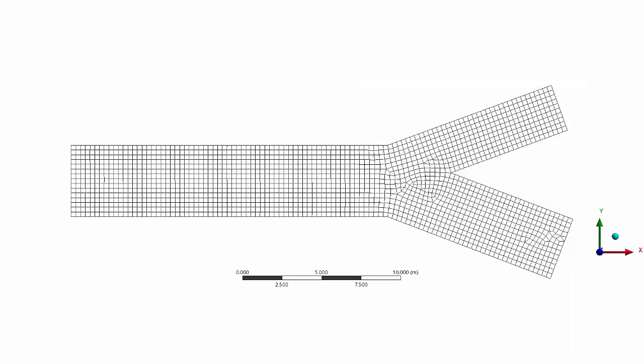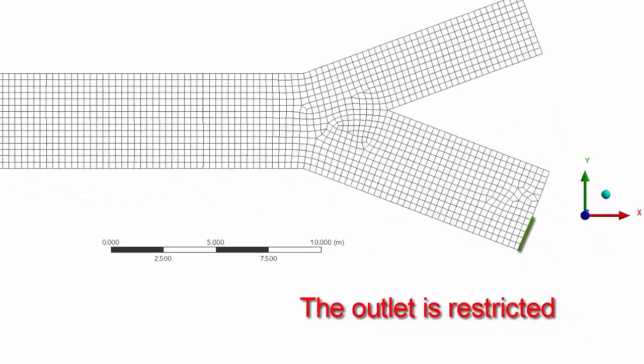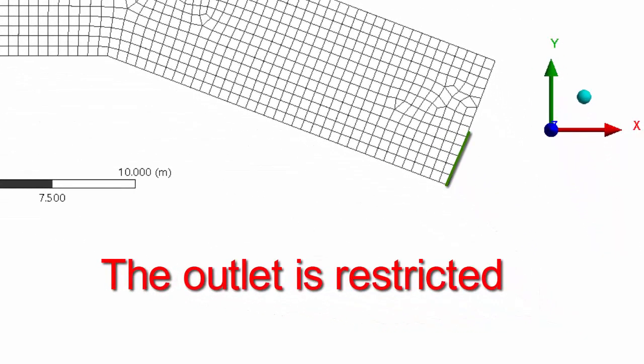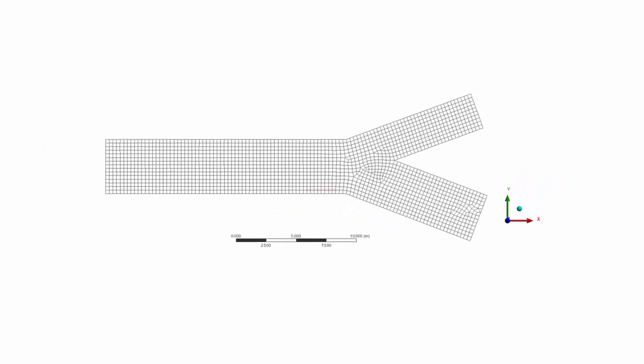Now I am slightly changing the geometry to create an obstruction at the outlet of the geometry and computing the same results again.